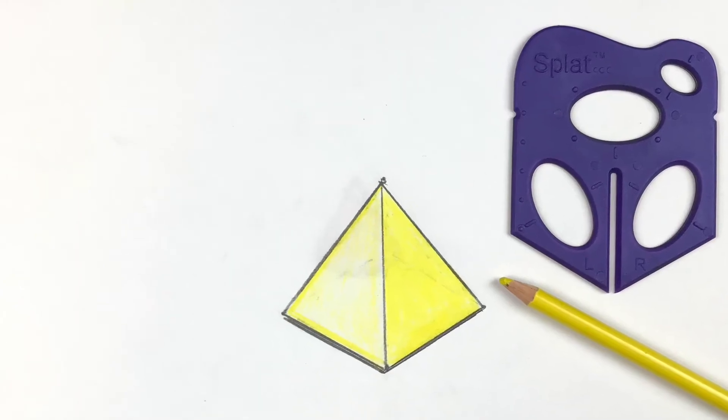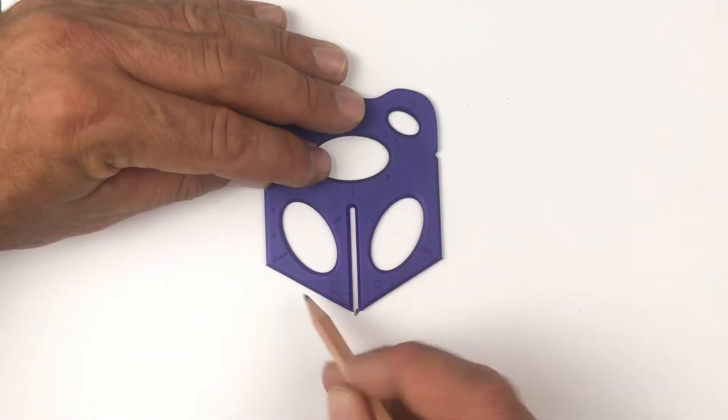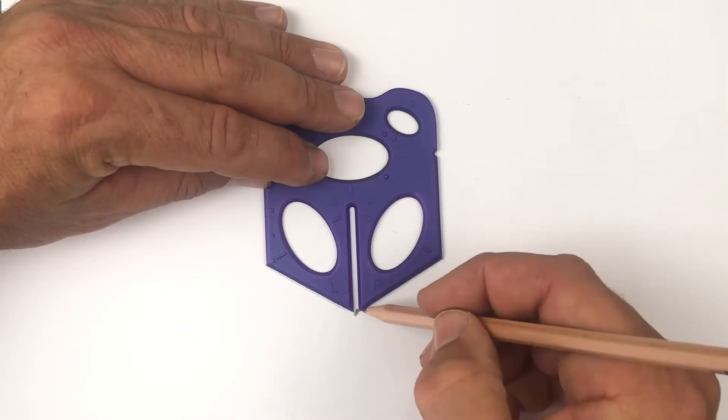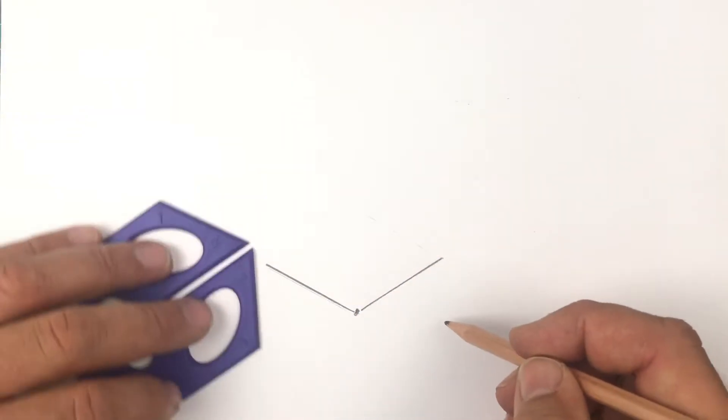We're drawing a square-based pyramid. Let's start off by drawing a left and right splat line and then rotate around.